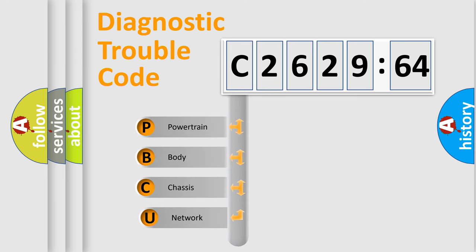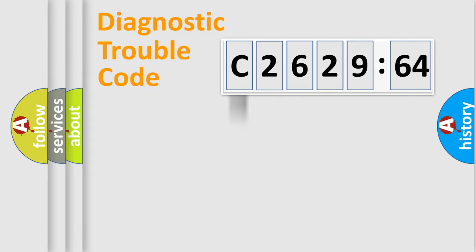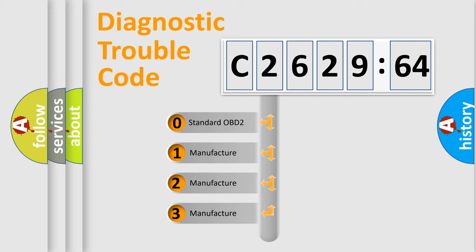First, let's look at the history of diagnostic fault code composition according to the OBD2 protocol, which is unified for all automakers since 2000. We divide the electric system of an automobile into four basic units: Powertrain, Body, Chassis, and Network. This distribution is defined in the first character of the code.